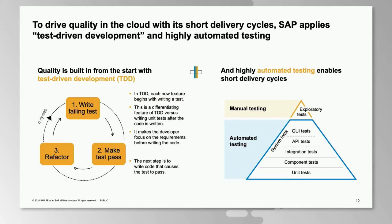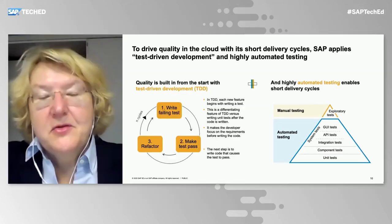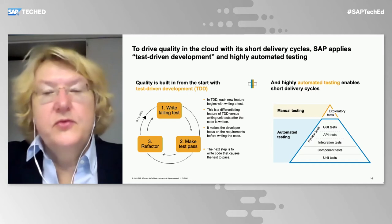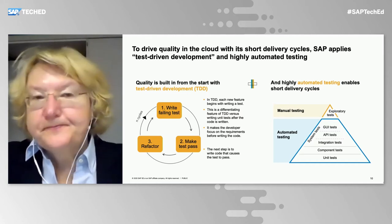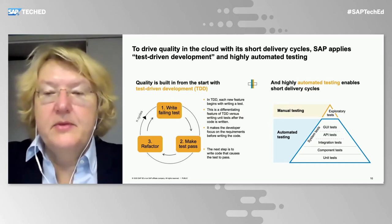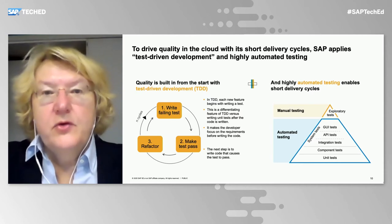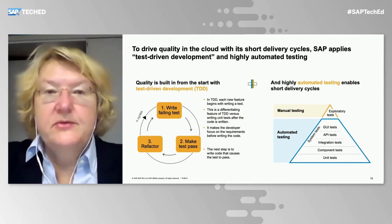The other aspect is automation, going along the whole stack from unit to component to integration testing, as well as the user interface, where we try to automate to the best extent possible. On the other side, we are also experimenting with exploratory tests and chaos testing, which allows for risk mitigation and complements the high-end automated testing for cloud solutions as well as on-premise.